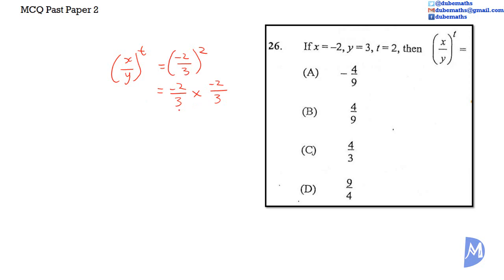Nothing can cancel, so you multiply out the numerator. Negative 2 multiplied by negative 2 is equal to positive 4. And the denominator, 3 multiplied by 3 is equal to 9. The answer is B.